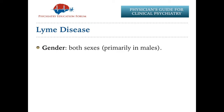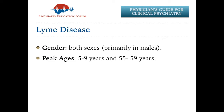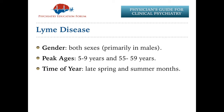Lyme disease is mostly seen in both sexes, primarily in males. There are two peak ages: 5 to 9 and 55 to 59. The time of year where more cases are seen are late spring and summer months, mainly because most people spend time outdoors during these months. But be mindful — cases have been reported throughout the year, and all ages and both genders are affected. Let's start with the clinical features of Lyme disease.